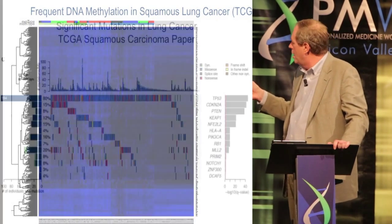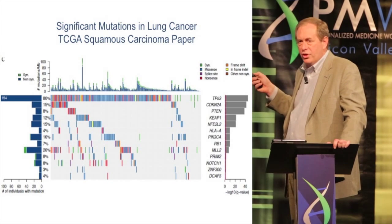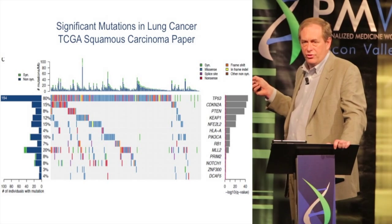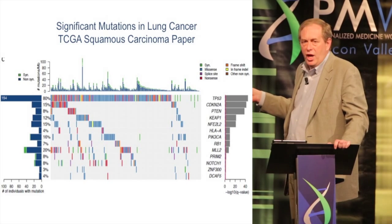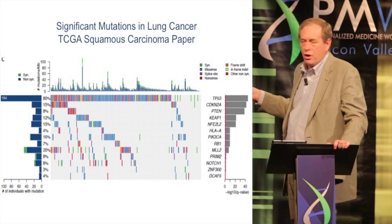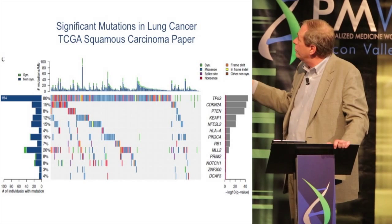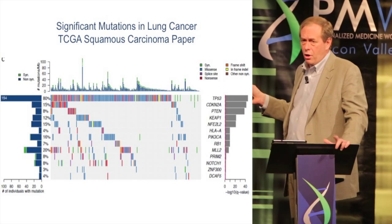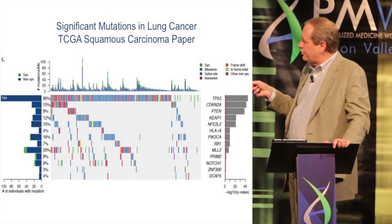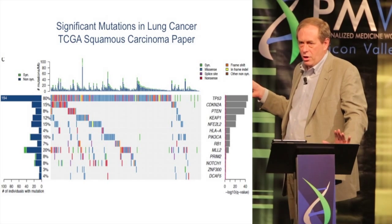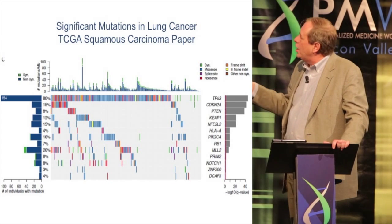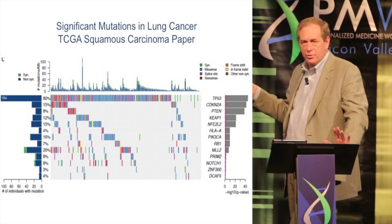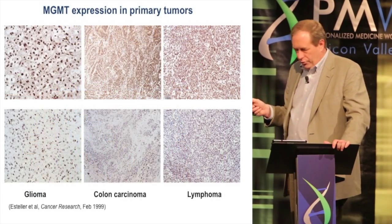One way we've approached this is to look at methylation the same way that mutational changes have been used to target therapies. Again from that same paper, these are the mutational alterations. When we know the specific mutations present in tumors, there's potential to use these for targets. One challenge in squamous cell cancer is that frequently mutated genes like p53, PTEN, and p16 are not really targetable by therapies we have today. But this approach has been used successfully in lung adenocarcinoma using EGFR inhibitors based on EGFR mutations. So can we use patterns of DNA methylation to target specific therapies?